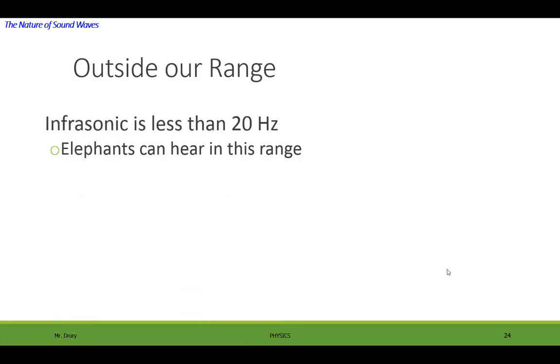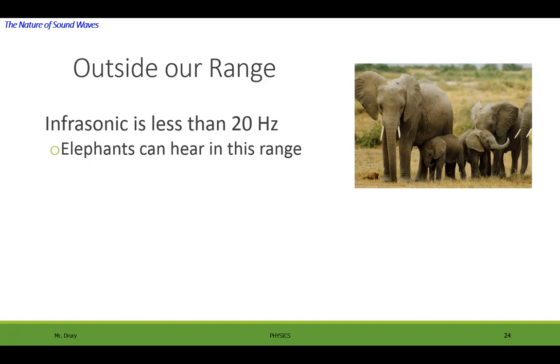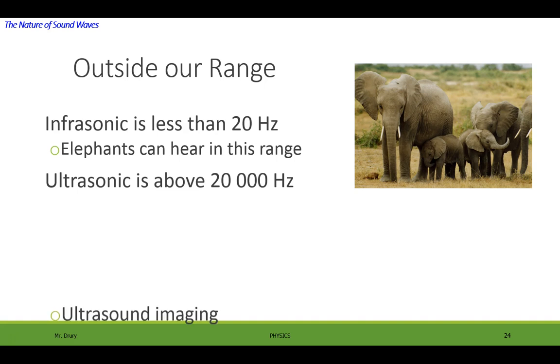So outside of our hearing range, you have what's called infrasonic, which is less than 20 Hertz, and elephants can hear in this range. And you have ultrasonic, which is above 20,000 Hertz, and this is what they use for ultrasonic imaging.